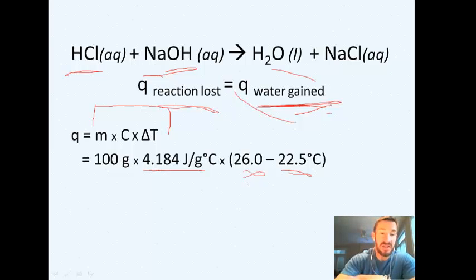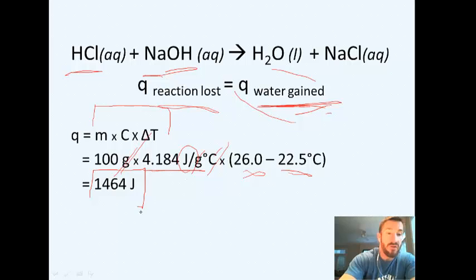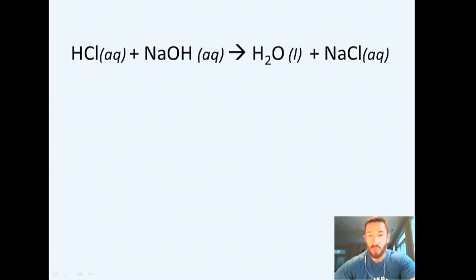When you multiply these together, we see grams cancels out, degrees Celsius cancels out, and you're left with your final answer in joules. Now, the final answer we get for this is 1,464 joules. For this, we know that this is actually a negative Q because it's an exothermic reaction, and that means it's exothermic.